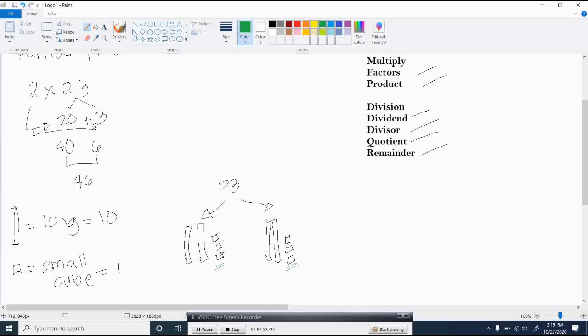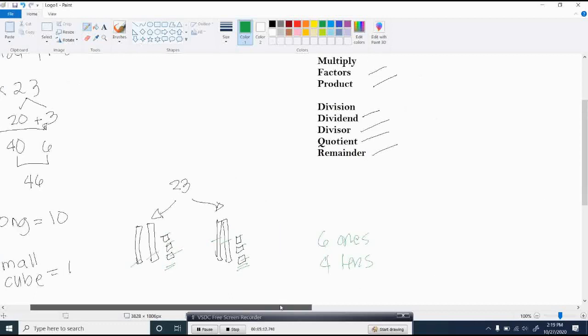Now simply add the ones. 1, 2, 3, 4, 5, 6. So you have 6 ones. Let us count and add the tens. 1, 2, 3, 4. So you have 4 tens. So 40 plus 6 will give you 46.